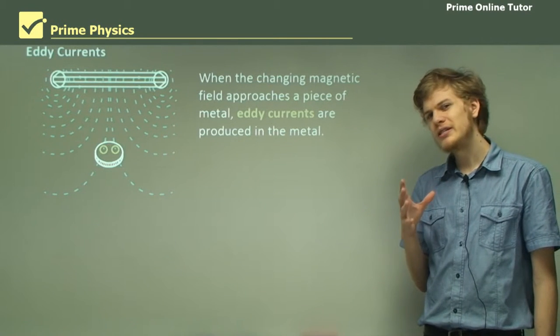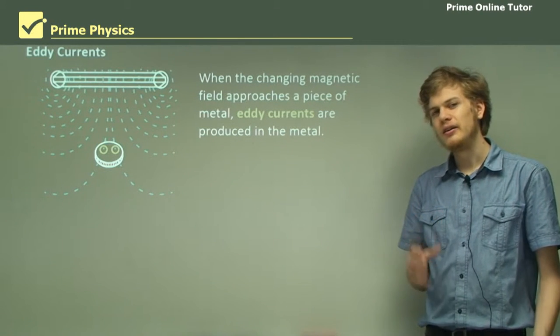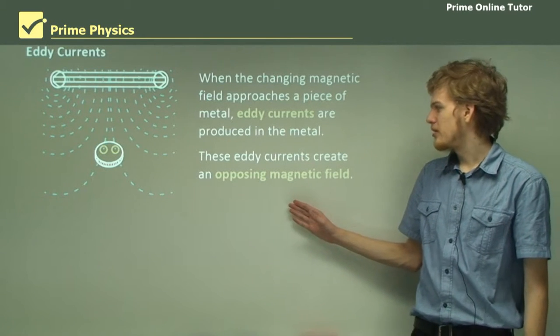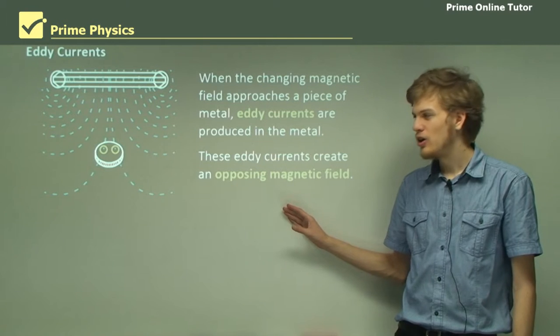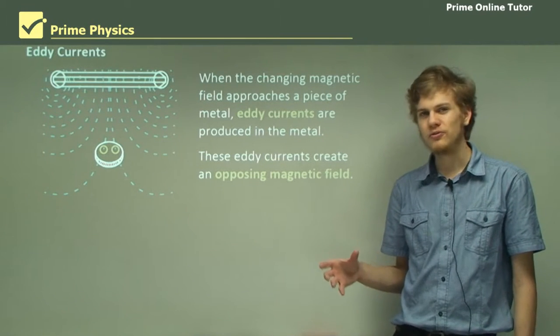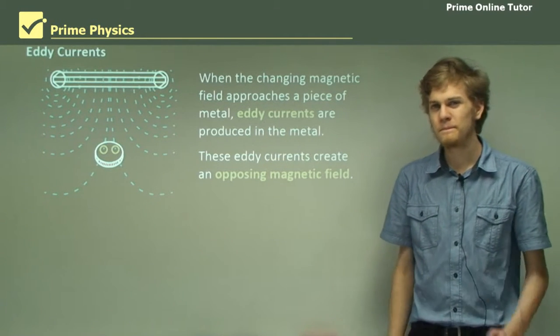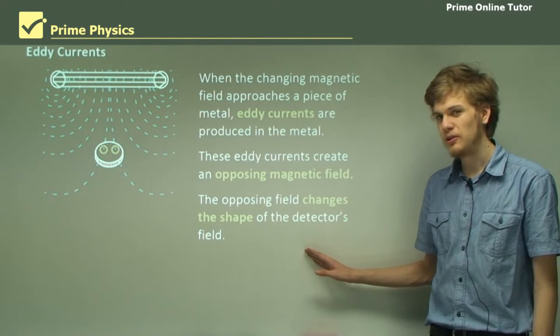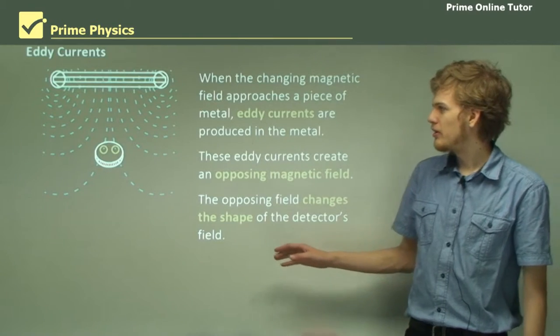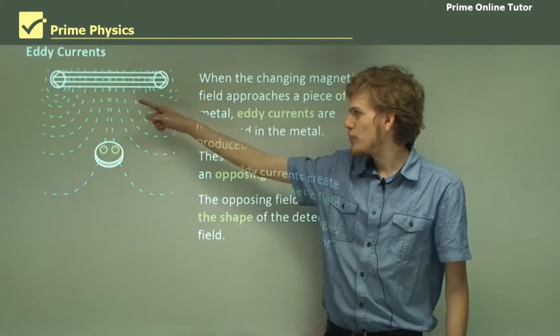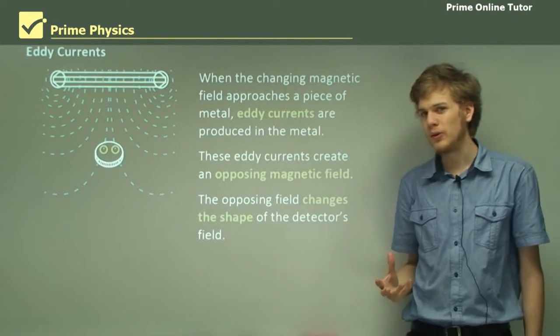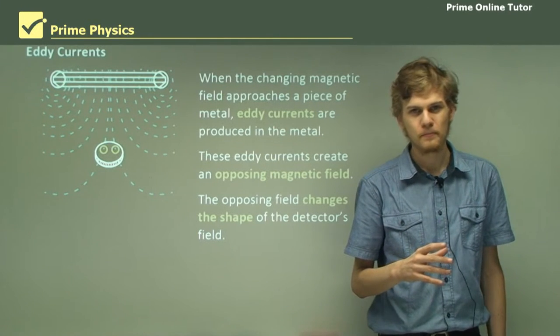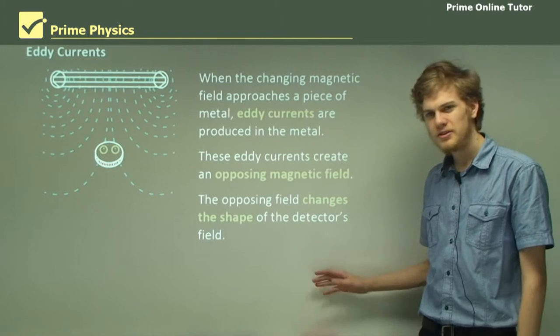What these eddy currents do is they oppose the magnetic field. The eddy currents create an opposing magnetic field which will distort the magnetic field that's already there. This means the magnetic field will change shape just a little. There'll be a tiny change all along the magnetic flux all the way back to the coil that produced it and the coil that's detecting it.